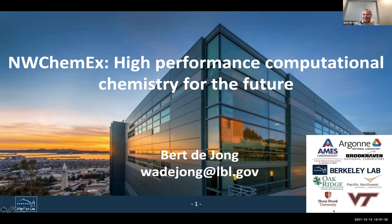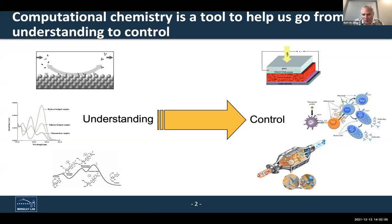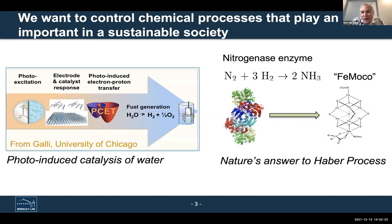NWCMX — better said, the next generation of NWCM. Let me start by motivating, especially for the students, why we even want to develop scalable software. When we do computational simulations, our goal is to get a fundamental understanding of chemical processes, reactions, reaction barriers, processes at surfaces and interfaces probed by different experimental capabilities. That information together can lead us to control of chemical and materials processes that allow us to build better catalysts and better molecular structures for various applications. Here are some examples relevant to a more sustainable society, which is a highly important aspect within the Department of Energy.